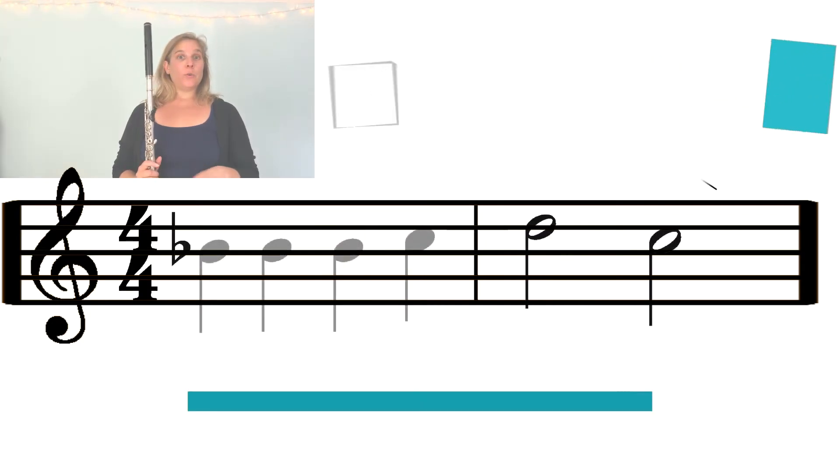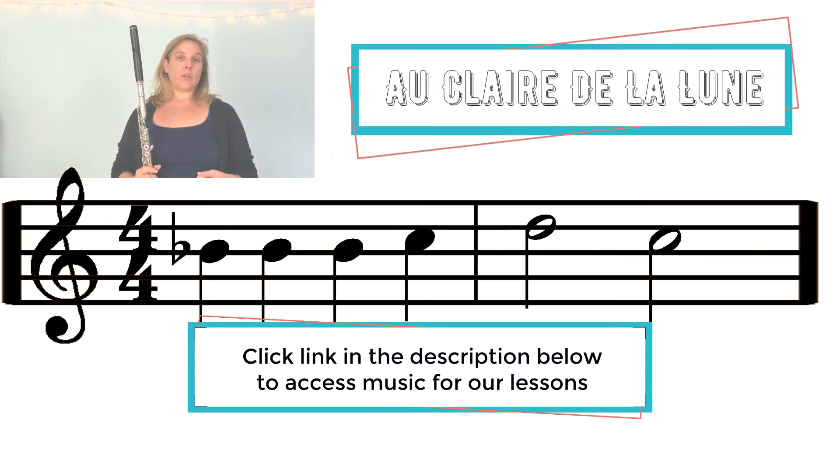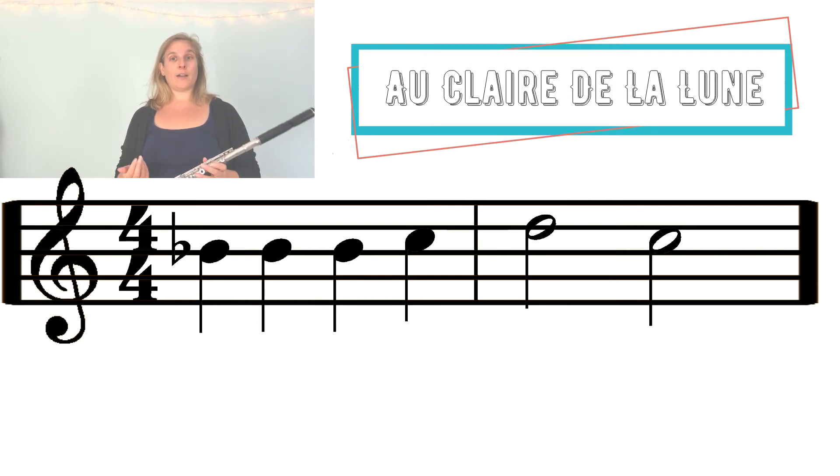Next, we'll review Au Claire de la Lune, also with reading our music notes on the staff. So we'll start with B flat on line three. Then we step up to C in the first measure. And then we have a half note D and a half note C.